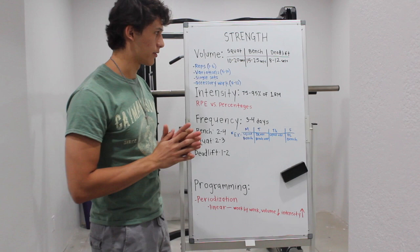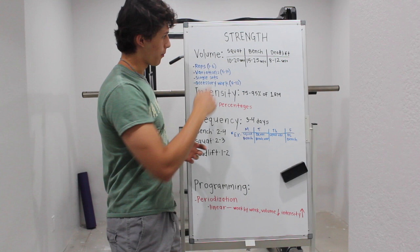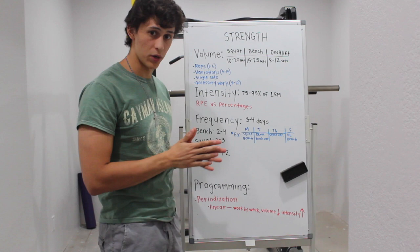With volume when it comes to strength, you want to perform about 10 to 20 sets per week of squatting, 15 to 25 sets per week of bench, and 8 to 12 sets per week of deadlift.